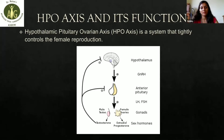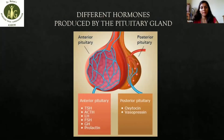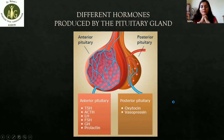Regarding the anterior and posterior pituitary: the posterior pituitary passes signals through neurons present in the nerves, while the anterior pituitary passes all signals through the blood.